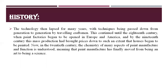Then the technology lapsed for many years, with techniques being passed down from generation to generation by traveling craftsmen. This continued until the 18th century, when paint factories began to be opened in Europe and America. By the 19th century, this mass production had brought prices down to such an extent that houses began to be painted. Now in the 20th century, the chemistry of many aspects of paint manufacture and function is understood, meaning paint manufacture has finally moved from being an art to being a science.